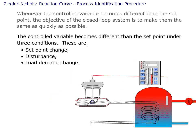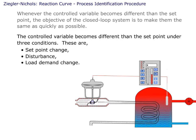The controlled variable becomes different than the set point under three conditions. These are the set point change, the disturbance, and the load demand change.